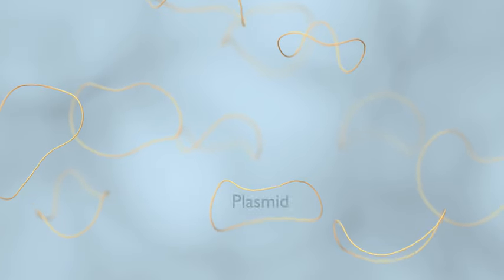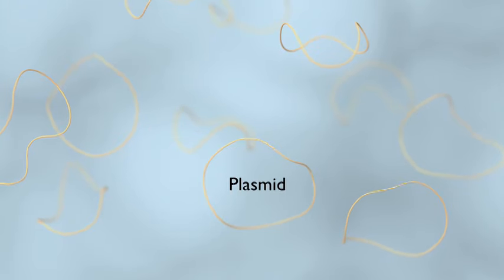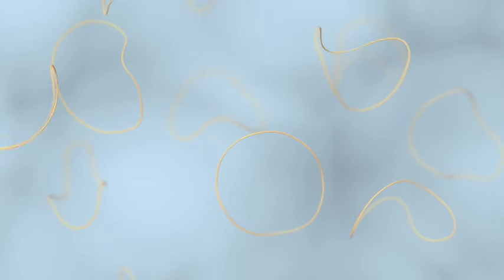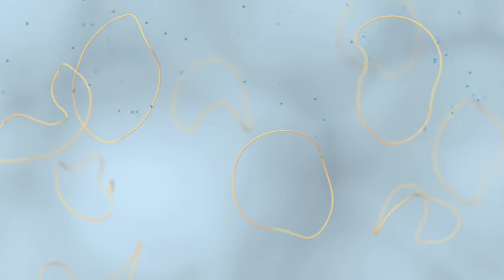For example, circular pieces of DNA, called plasmids, found inside bacterial cells, can be engineered to make such proteins as human insulin by inserting the gene that codes for that protein.